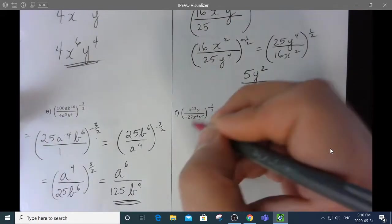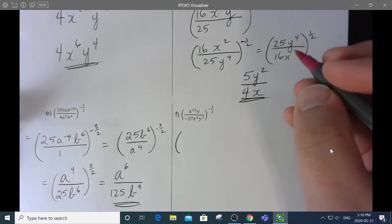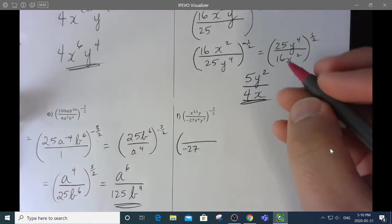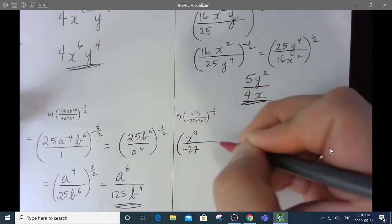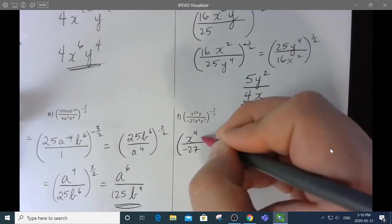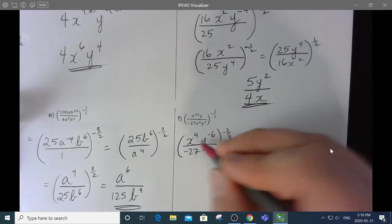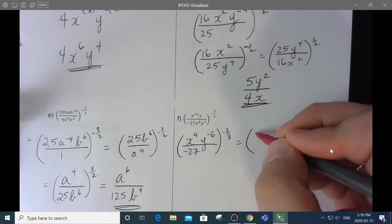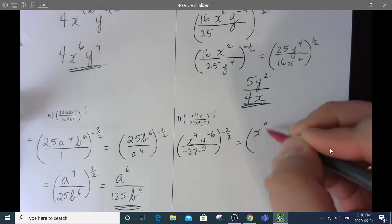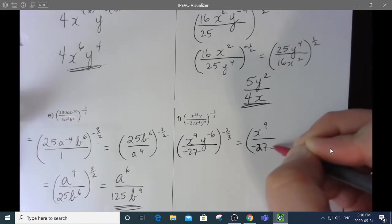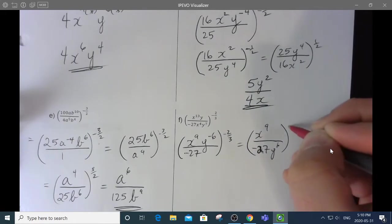And the last one. Again, I'll deal with changing the inside first. That's going to be negative 27 has nothing to combine with, so it stays there. 13 minus 4 is 9, and 1 minus 7 is negative 6. But I don't want negative exponents, so I'll change that to x to the 9 over negative 27, y to the 6.